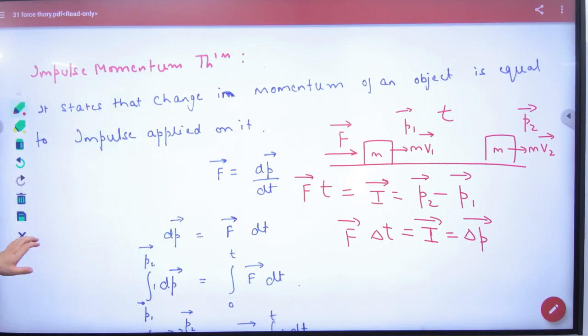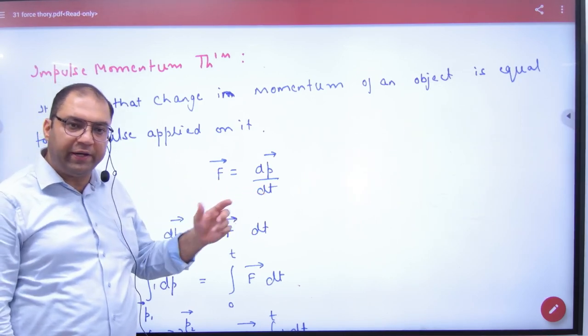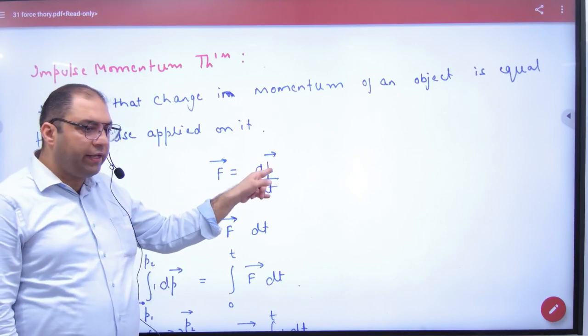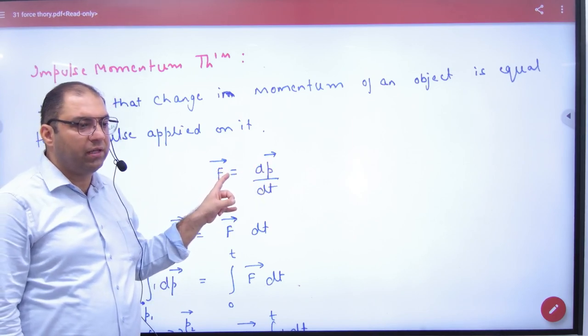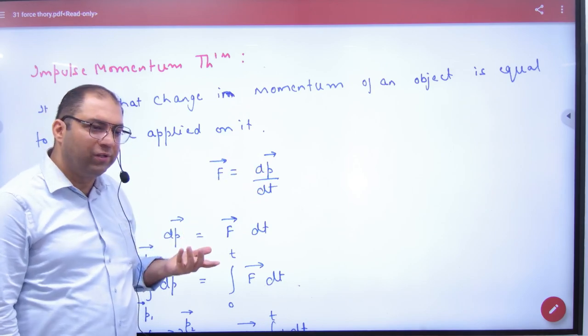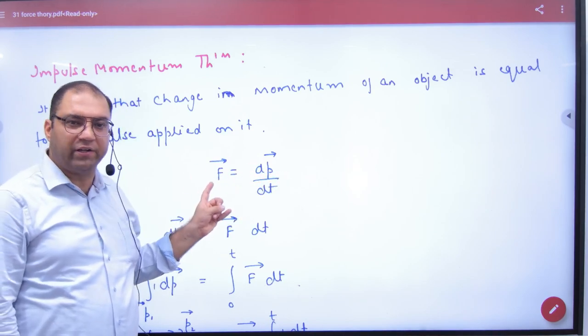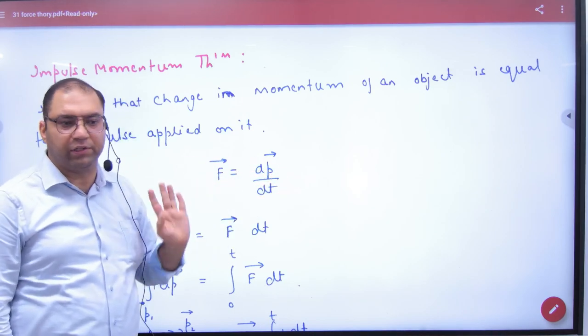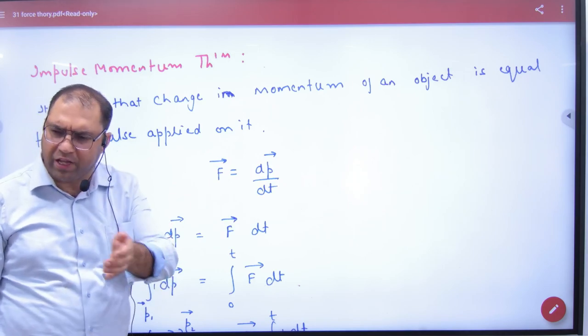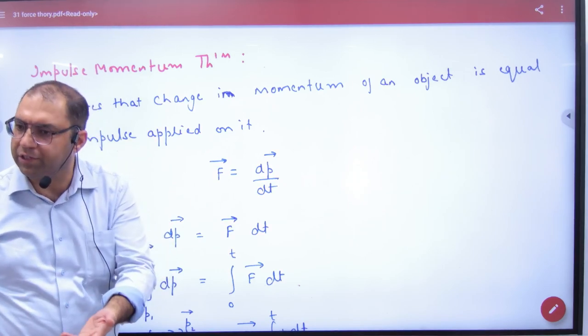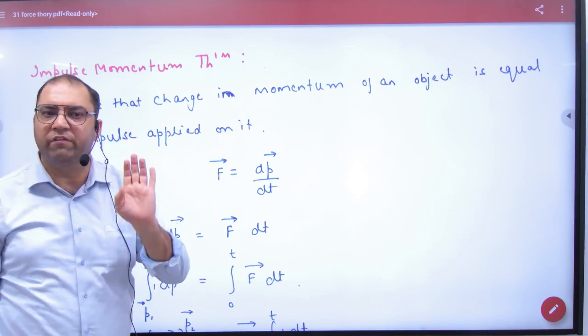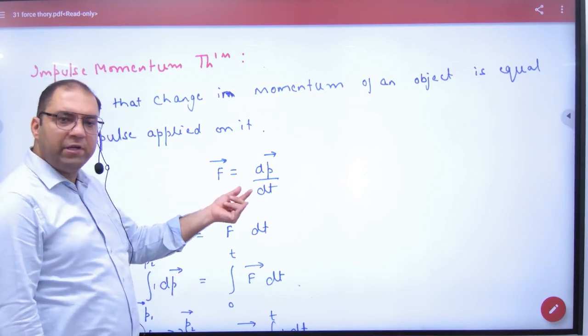Newton's second law states that F vector is dp by dt. Because there is a vector, this is also a vector. You can't write such a vector. If you want to write a vector here, this is also a vector. If you don't write it, then don't write both vectors. Maybe you are talking about scalar or you are talking about vector. Then you will put a vector on every quantity.